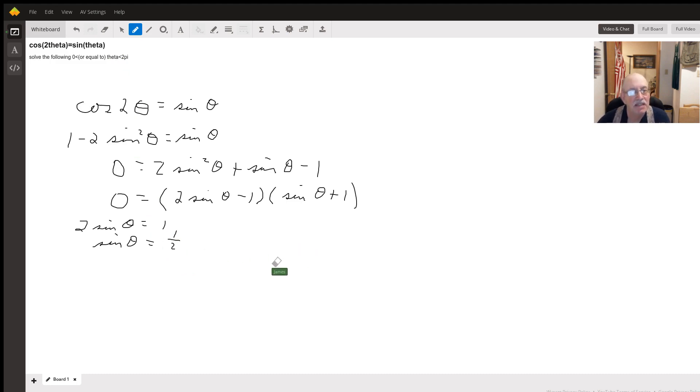Let me write that out, that's where I screwed it up. 2 sine theta minus 1 equals 0. We'll put all the steps in there. 2 sine of theta equals 1, sine of theta equals 1 half.